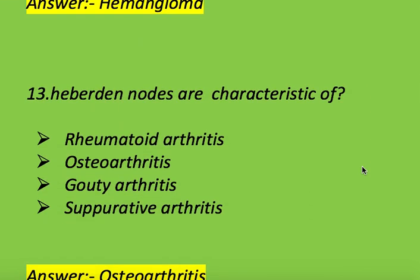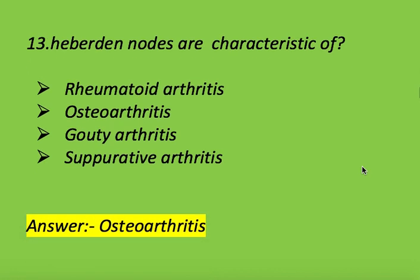Next question: Heberden's nodes are characteristic of which condition? Options: osteoarthritis, gouty arthritis, and suppurative arthritis. Right answer is osteoarthritis. Heberden's nodes are characteristic of osteoarthritis.